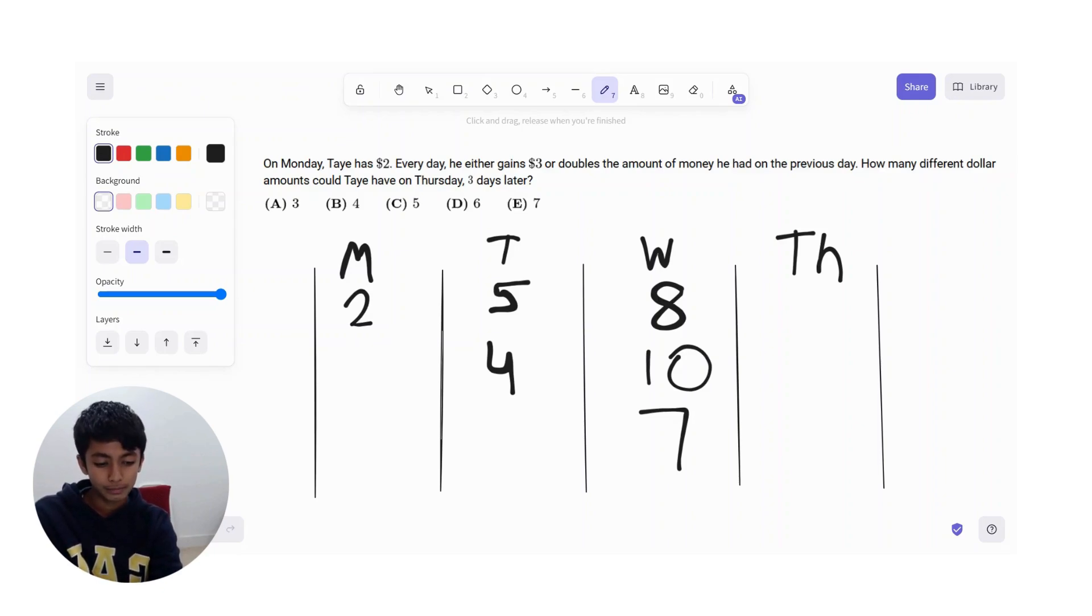Eight plus three, eleven. Eight times two, sixteen. Ten plus three, thirteen. Ten times two, twenty. Seven plus three, ten. Wait. And seven times two is fourteen.